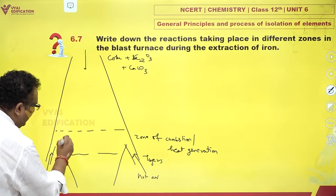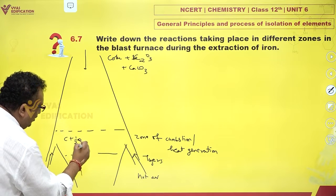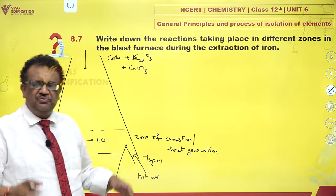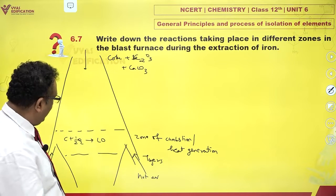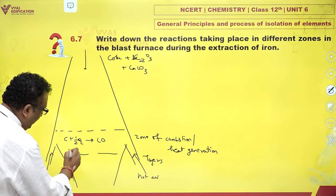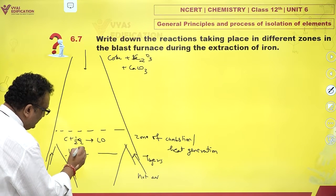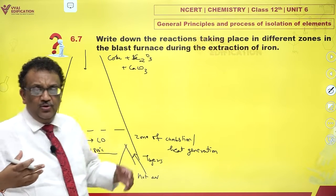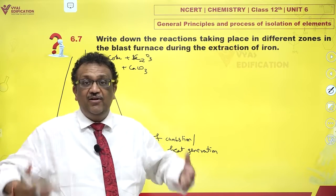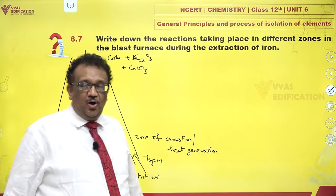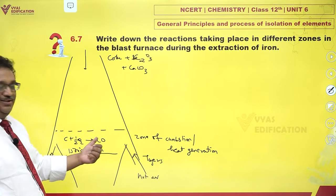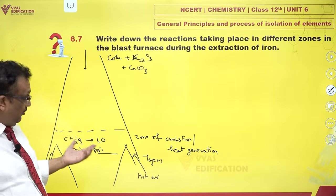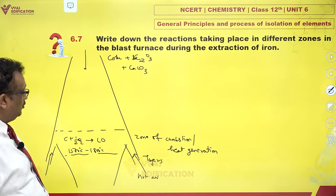This is where C reacts with oxygen to give you carbon monoxide. It's very hot, roughly around 1500 to 1800 degrees Celsius. This is the zone of heat generation — obviously the hottest zone. As carbon monoxide is formed, this is truly a hot zone, no doubt.